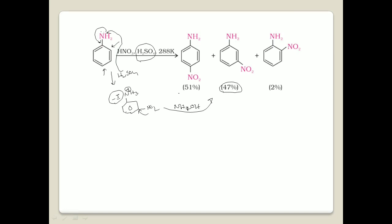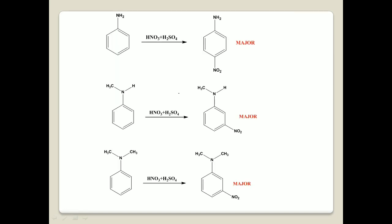Now this is the nitration of aniline. Next, let us consider the nitration of N-methylaniline and N,N-dimethylaniline. In the case of aniline nitration, para is the major product at 51% — very minor difference from 47%. But if we look at N-methylaniline and N,N-dimethylaniline, we get the meta isomer as the major product.